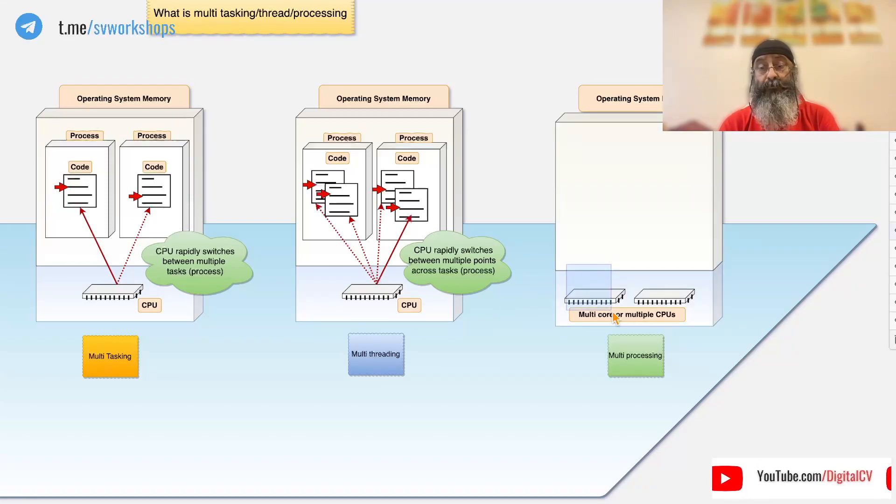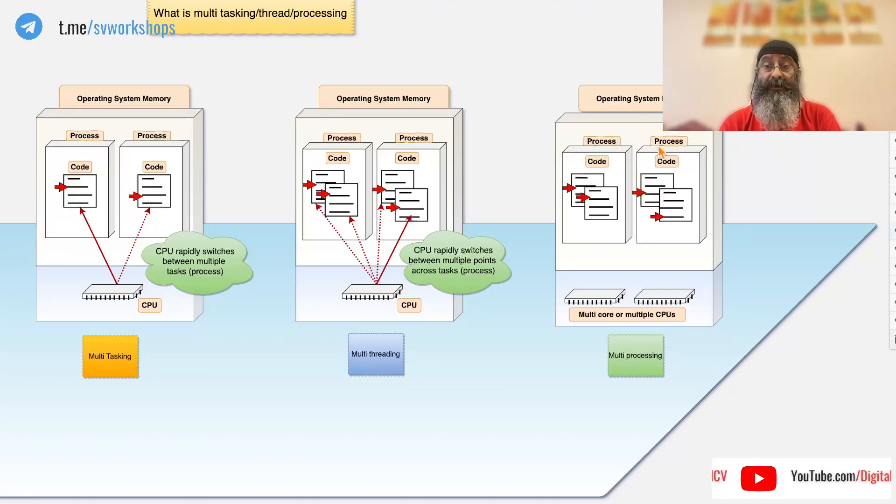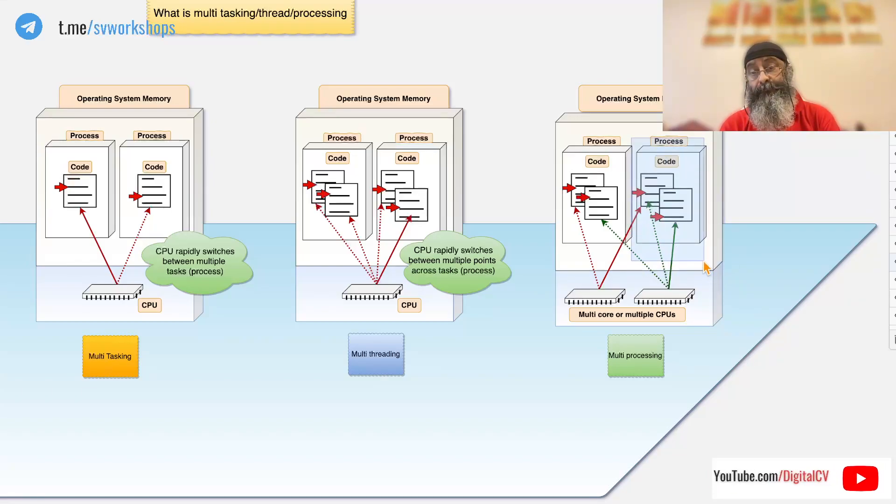Eventually, multiple CPUs or multiple cores became available. This is like multiple waiters serving different tables. So we still have multiple processes or tasks. Each task can potentially have more than one execution point, but because we have multiple cores or CPUs, they can do more than one process truly in parallel. Or if need be, run two execution points of the same process at exactly the same time. This is known as multi-processing.